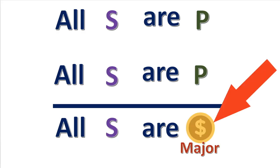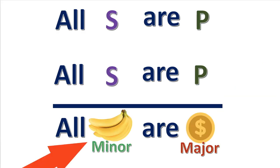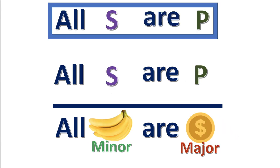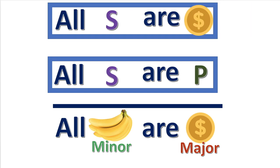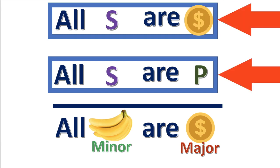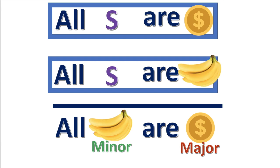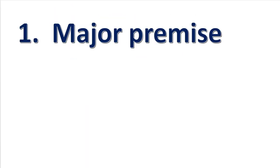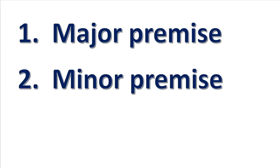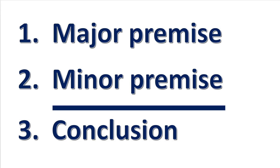Now that you know what the major and the minor terms are, you can determine what is the major and the minor premises. The major premise is the premise that contains the major term, and the minor premise is the premise that contains the minor term. To put the categorical syllogism into standard form, you put the major premise first, then comes the minor premise, followed by the conclusion.